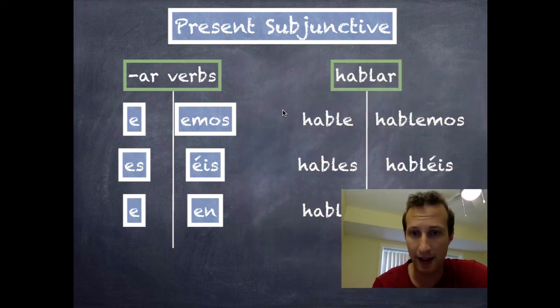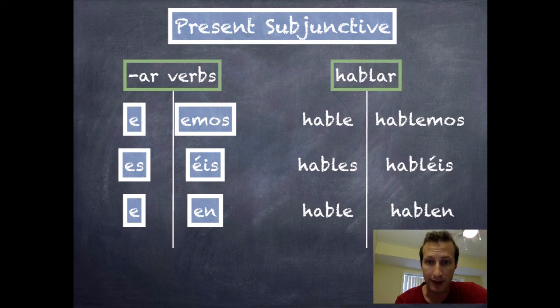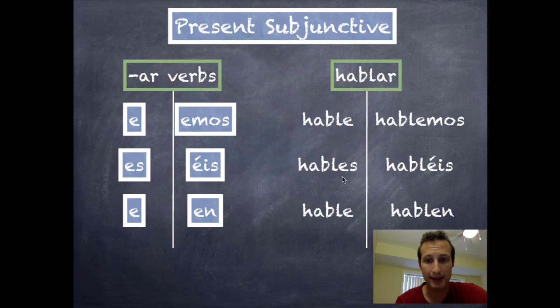Let's take a look at the verb HABLAR. In the subjunctive tense, this becomes HABLE, HABLES, HABLE, HABLEMOS, HABLEIS, and HABLEN.